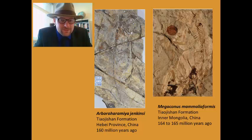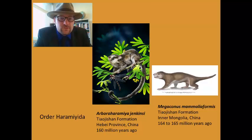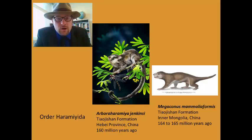Both skeletons are described as belonging to the members of an order called the Haramiida, which you've probably never heard of. Here is a reconstruction of these two skeletons of what they may have looked like in life. Arboharamia was probably arboreal, whereas Megaconus was probably terrestrial, running around on the ground.